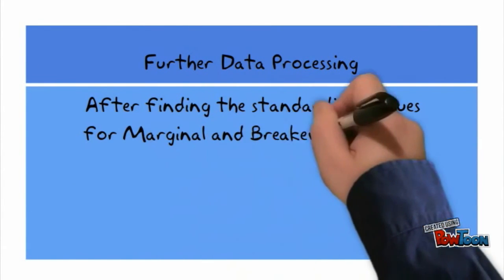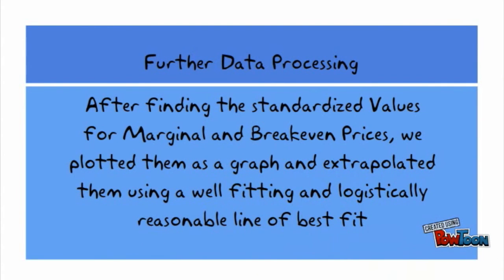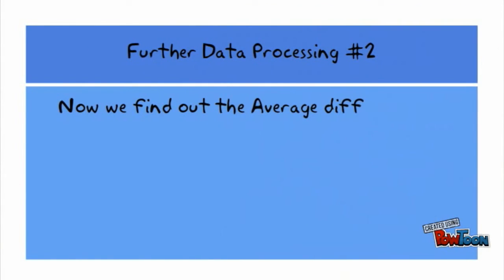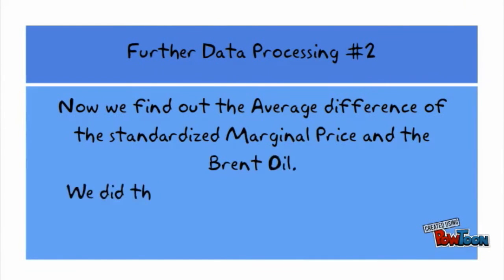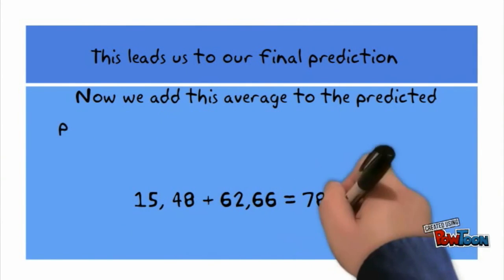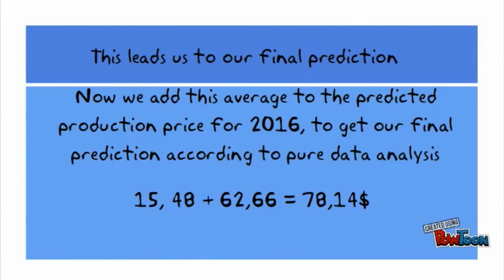After finding the standardized values for marginal and break-even prices, we plotted them as a graph and extrapolated them using a well-fitting and logistically reasonable line of best fit. We then found the average difference between the standardized marginal price and the Brent oil price by subtracting one value from another for each year and taking the average. We add this average to the predicted production price for 2016 to get our final prediction according to the pure data analysis: $15.48 plus $62.66 equals $78.14.